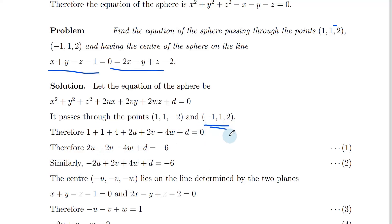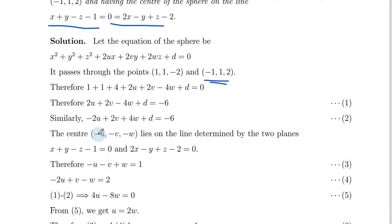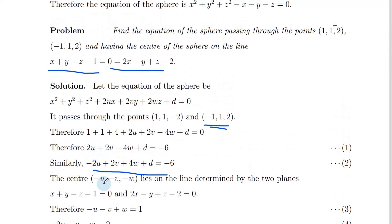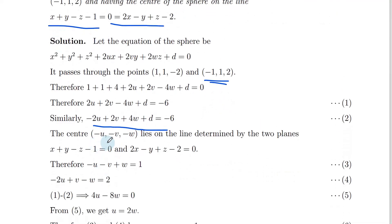Substituting point (1,1,2): 1² + 1² + 2² + 2u(1) + 2v(1) + 2w(2) + d = 0, giving 2u + 2v + 4w + d = −6. Substituting point (−1,1,2) similarly gives −2u + 2v + 4w + d = −6. In general form, the center is (−u, −v, −w). Since the center lies on the line determined by the two planes, we substitute the center coordinates.